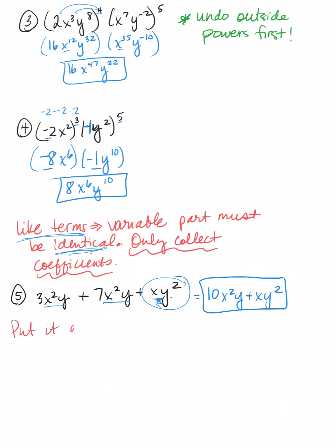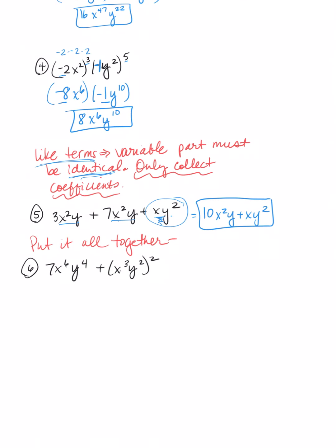Now, let's put it all together and see what we get. Example 6. 7x to the 6th, y to the 4th plus x to the 3rd, y squared squared. Let's see what happens here. So, we want to do the outside power thing first. Right? So, I'm going to rewrite this. Get rid of my outside power by distributing that power. So, I have x to the 6th, y to the 4th. Now, I lean back and look. Ooh, my variables and their powers match. So, I can collect those together. And I would get 8x to the 6th, y to the 4th. So, that one worked out.